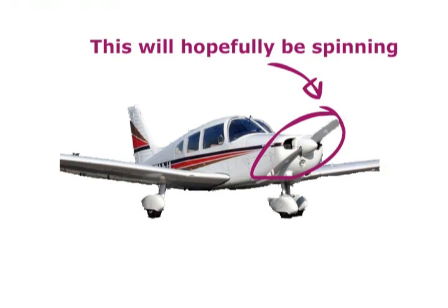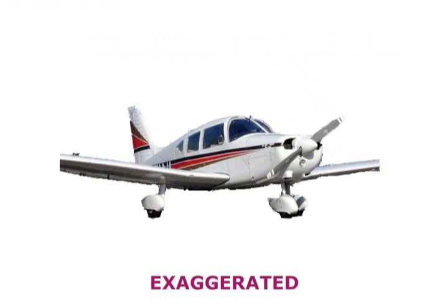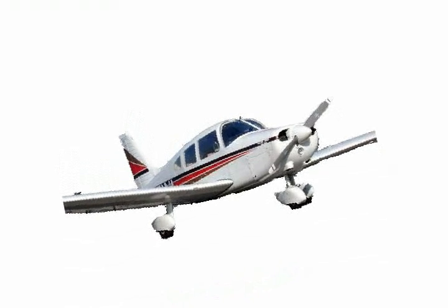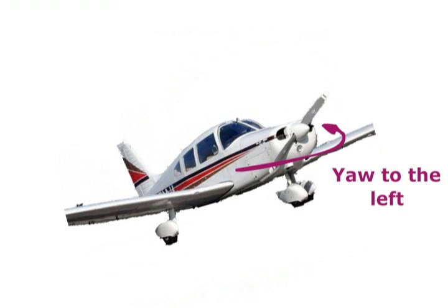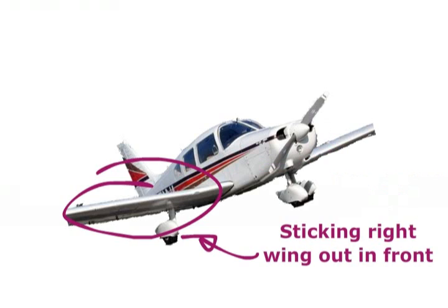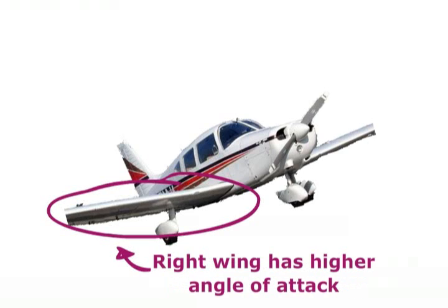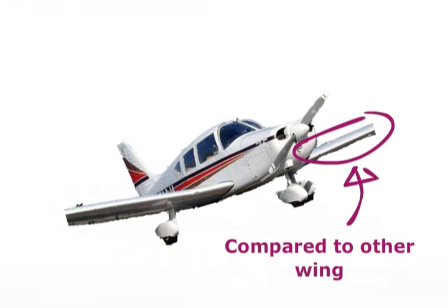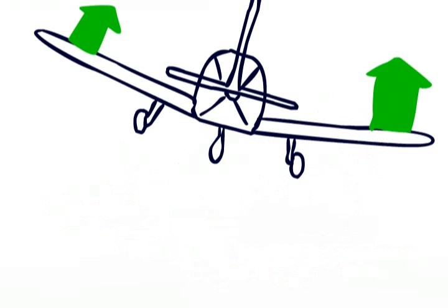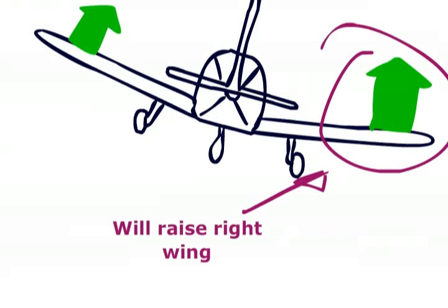Using a photo to illustrate this, and exaggerating the movements a bit, you can see that banking to the right will yaw the aircraft to the left, sticking the right wing out a bit. You can see visually that you can see more of the bottom of the lower wing, which means it has a higher angle of attack than the upper wing. Higher angle of attack means more lift, raising the lower wing, and the aircraft goes back to level again.